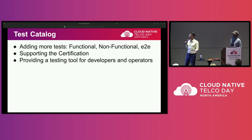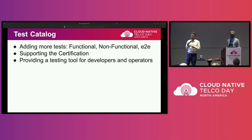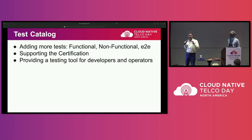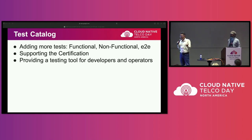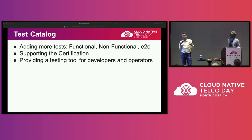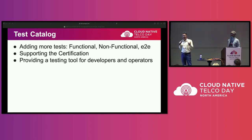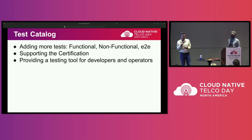I want to make clear that what we envision is an approach of a test catalog — meaning creating a large set of tests and test suites, but providing them in the form of a catalog. It's not a big monolith that you have to use as a whole or not, but rather a catalog where you can pick and choose the tests and certifications that are relevant to your use cases without having to worry about things that may not be relevant. We are aiming to serve whoever is building and deploying cloud native network functions, and this modular approach to the test catalog will help with adoption.